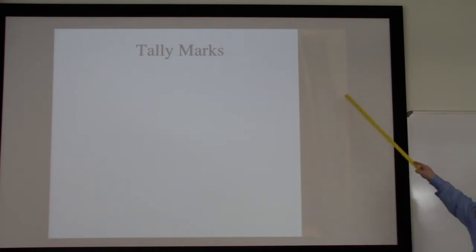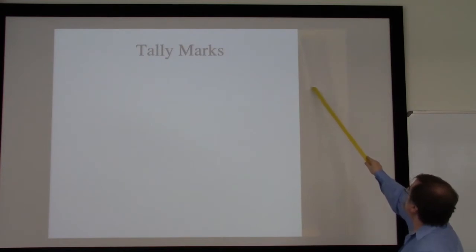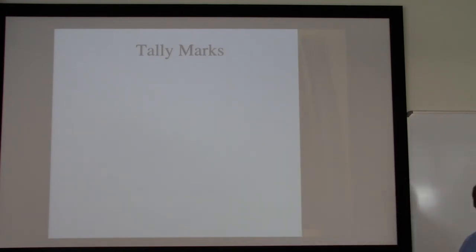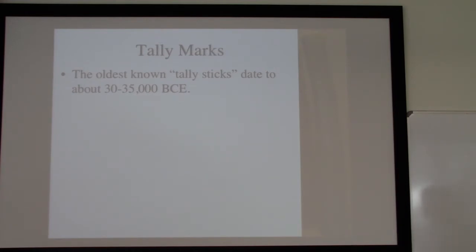This is what's referred to as the Ishango bone — a bone with a whole bunch of little striations, little marks that appear to be tally marks all along it. The oldest known tally sticks of this form date back to about 30,000–35,000 BCE, the Upper Paleolithic era. This is the simplest possible form — what we could almost think of as a base-one notation. You just use ones over and over again to keep track of something.